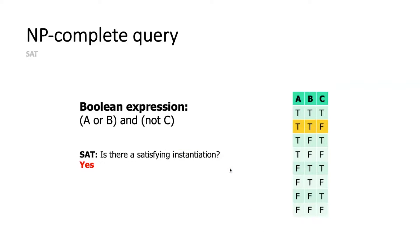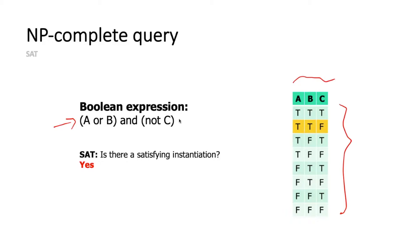The first prototypical query is SAT. You have a Boolean formula over variables A, B, C, giving multiple instantiations. The question of SAT is: is one of these instantiations satisfying? Can you find a truth assignment that satisfies this formula? Yes or no. In this case, yes. SAT characterizes the class NP.